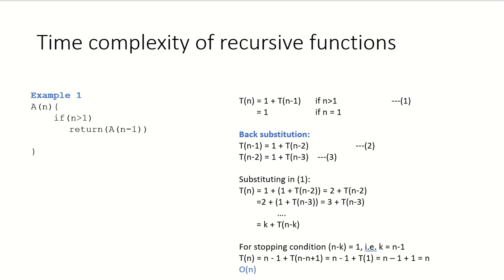Let's see how we can compute the time complexity of recursive functions. Suppose we have a function like this, and we see that if n is greater than 1, then we are going to have another function call for a(n-1). Here the input was n, and since we are using recursion, now the call is for a(n-1). Suppose the time taken by function a(n) is T(n), then the time taken by a(n-1) would be T(n-1).